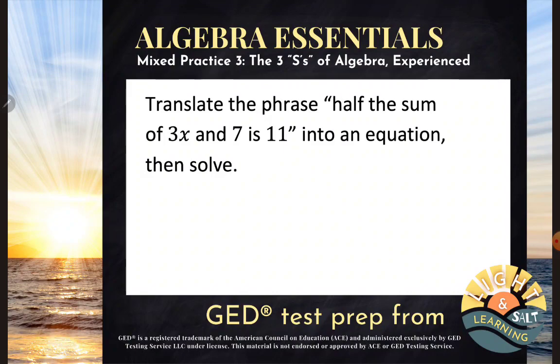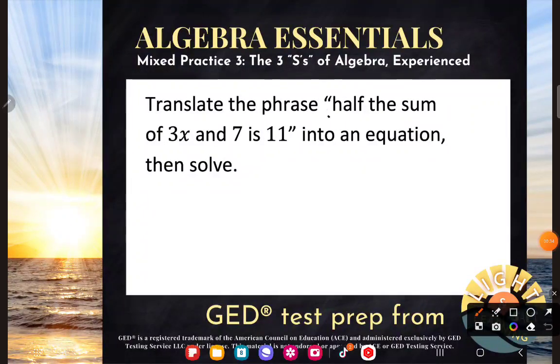So both of these skills come up on the GED, translating phrases into equations and solving. So we're gonna do both. Let's start by translating. Half the sum of three X and seven is 11. All right, let's start with the half. That's easy, half.